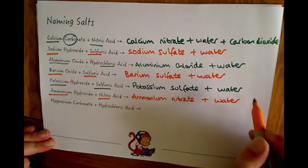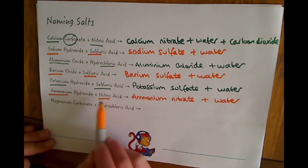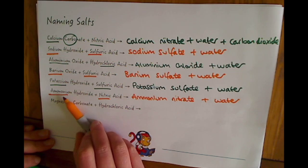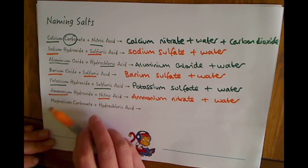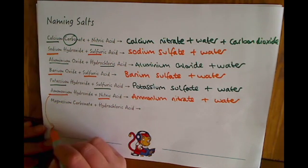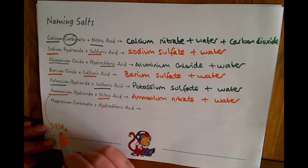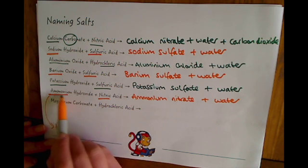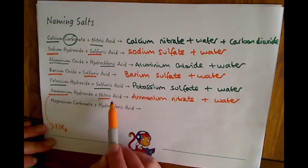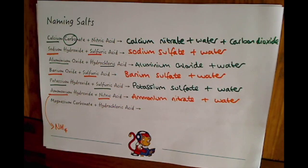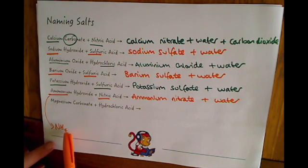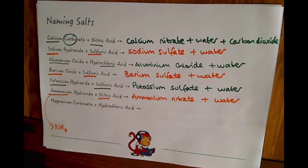Next one ammonium nitrate plus water. This one should have been a little curveball for you because ammonium you wouldn't find in the periodic table because ammonium is actually NH4. We'll talk about this in the next video. Well done if you've got this one. You just take the ammonium like before and the nitrate from the acid plus water. This one's not strictly a metal but it follows the same process as before.